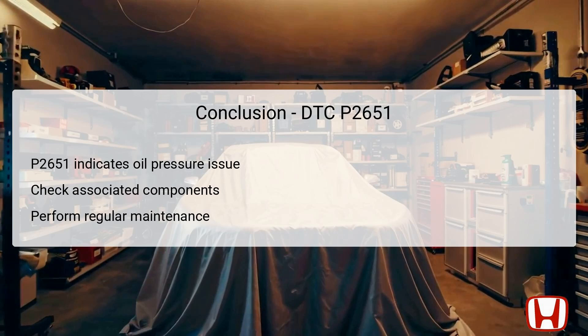In conclusion, the DTC P2651 signifies a critical issue involving the rocker arm oil pressure switch B within the Honda Accord's Variable Cylinder Management System. Effective troubleshooting requires a systematic approach from initial diagnostics to final verification after repairs. Understanding its causes and associated symptoms is essential for technicians to quickly identify and address the problem. Additionally, prioritizing preventive maintenance ensures that similar issues can be mitigated in the future. Proper handling of this code not only restores performance, but also enhances the reliability of the vehicle.